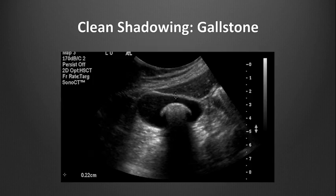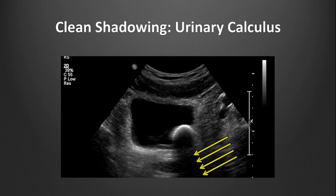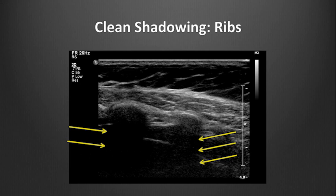Clean shadowing can be a clue to the presence of gallstones or urinary bladder stones. The yellow arrows here show a dark, hypoechoic area of loss of signal deep to the hyperechoic or bright white circular structure of the gallstone within the gallbladder. Here we see another example of clean shadowing deep to a urinary calculus within the bladder. The shadow is dark, with crisp edges and is directly deep to the hyperechoic calculus. The ribs also produce clean shadows.